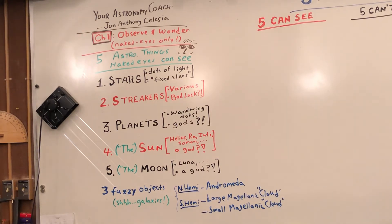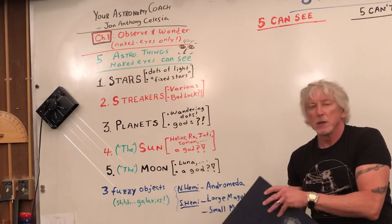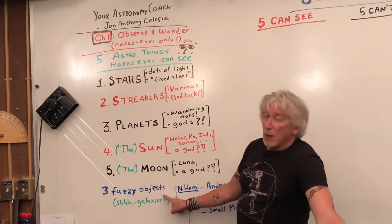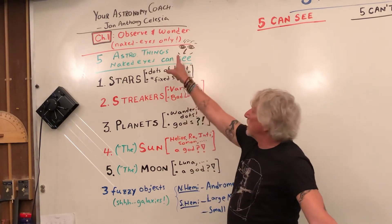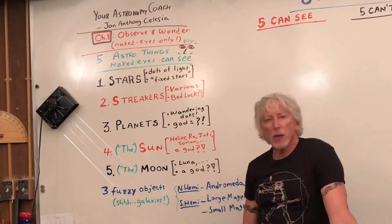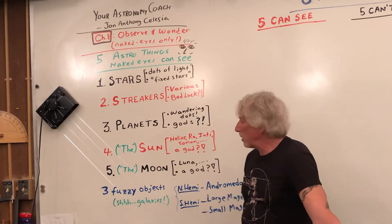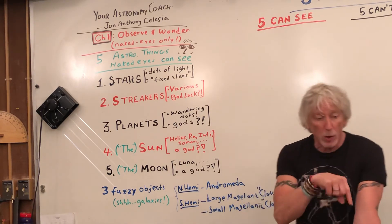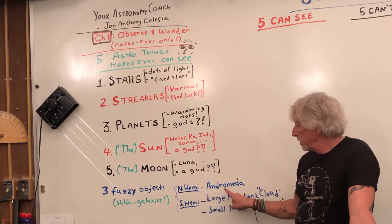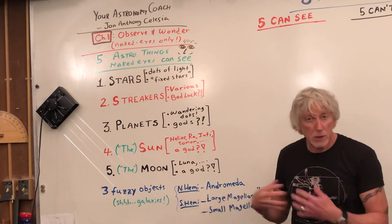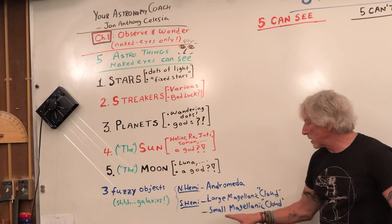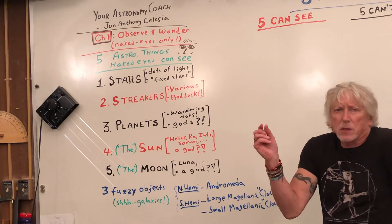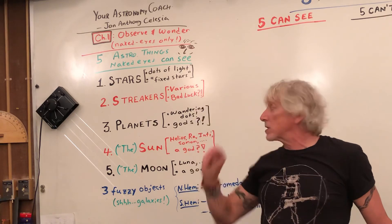Could people know about galaxies? They could see three fuzzy objects, but they didn't know what they were. Those fuzzy objects stayed with the dots, always in the same place and seen better in certain months — but they didn't know there were galaxies. The only galaxies a naked eye can pick out from Earth in the northern hemisphere is the Andromeda Galaxy, that huge one — and it's actually coming toward us.